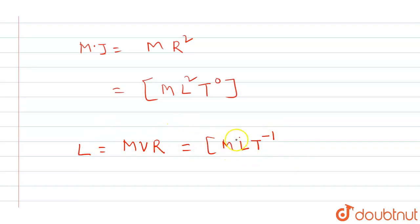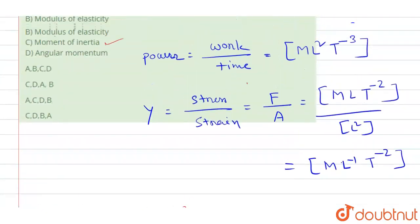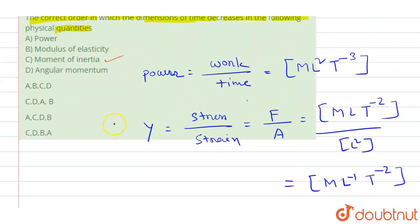So it will be ML²T⁻¹. Now option C has most order of T followed by D, then followed by B, and followed by A. So CDBA is our correct option. Thank you.